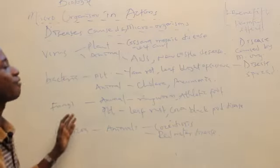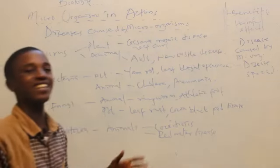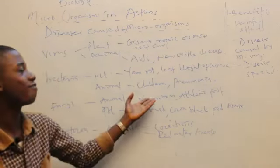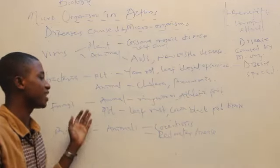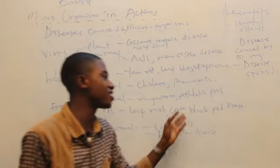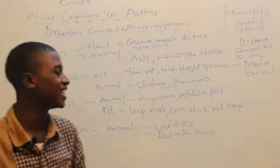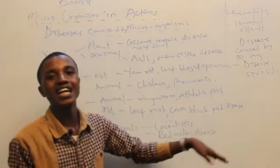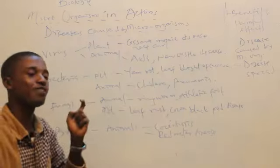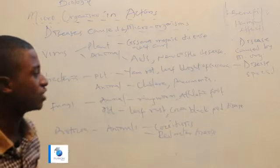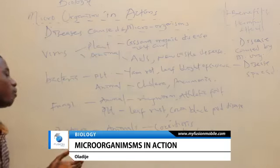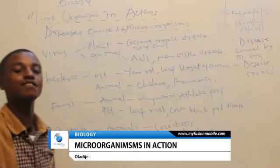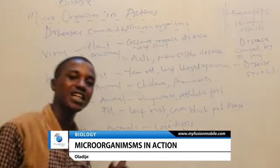Fungi affect animals, causing aspergillosis, ringworm, athlete's foot, and many others. They affect plants, causing liver rot and cocoa black pod disease. Cocoa black pod disease affects the pods of cocoa, so we call it cocoa black pod disease.